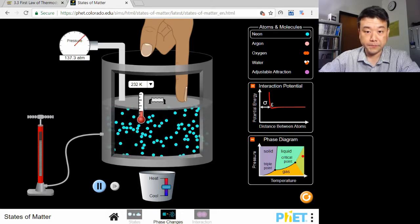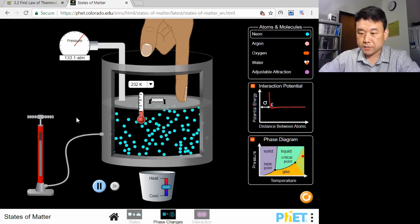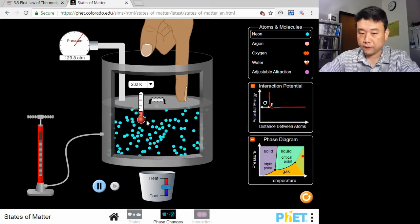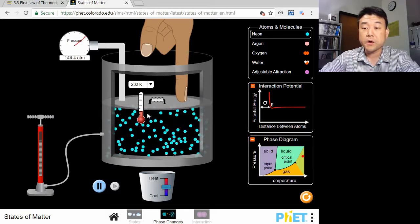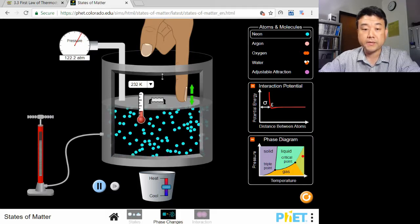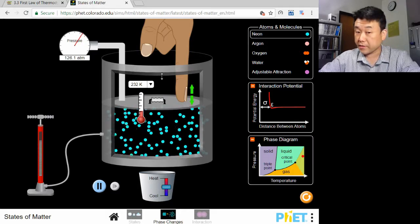But the simulation shows another view, the molecular model view. If you look at this picture of compression carefully, you can figure out from a mechanical point of view why the temperature of gas increases.